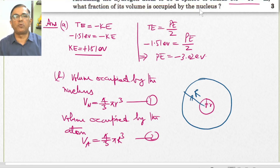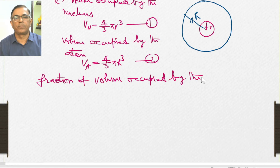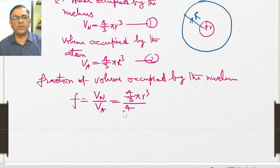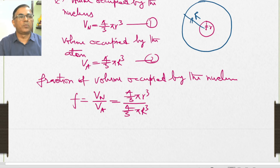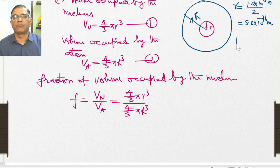We are supposed to find the fraction of volume occupied by the nucleus: volume of nucleus divided by volume of atom, which equals (4/3)π r³ divided by (4/3)π R³. The radius of the nucleus, small r, is 1.0 × 10⁻¹⁵ meters divided by 2, which equals 5.0 × 10⁻¹⁶ meters. The radius of the atom, capital R, is given as 5.3 × 10⁻¹¹ meters.